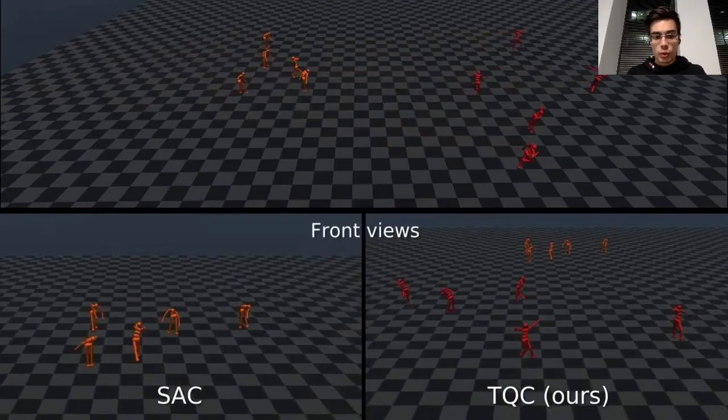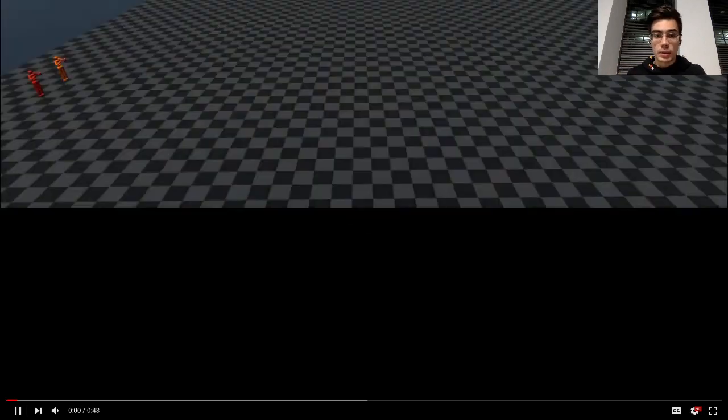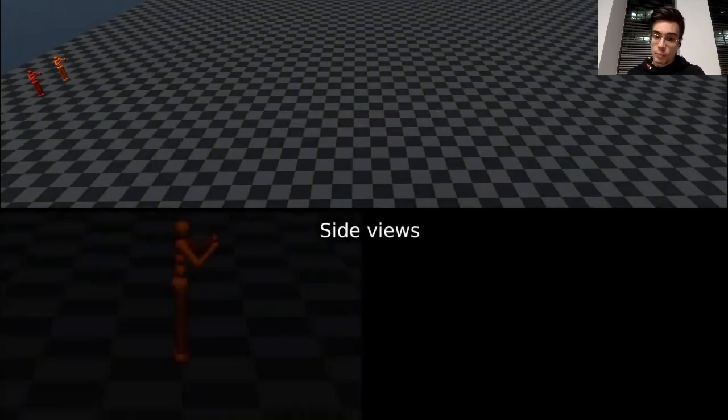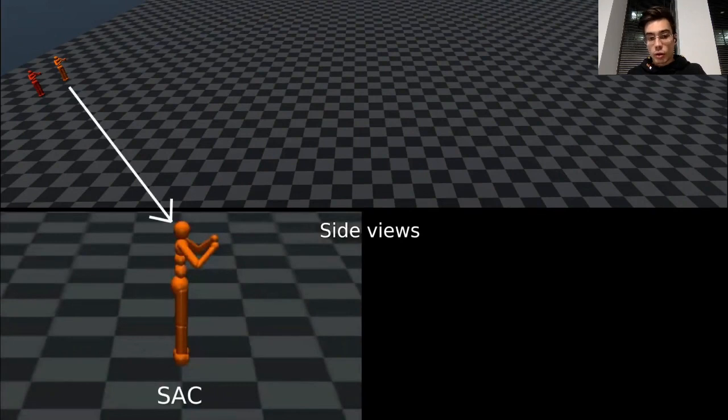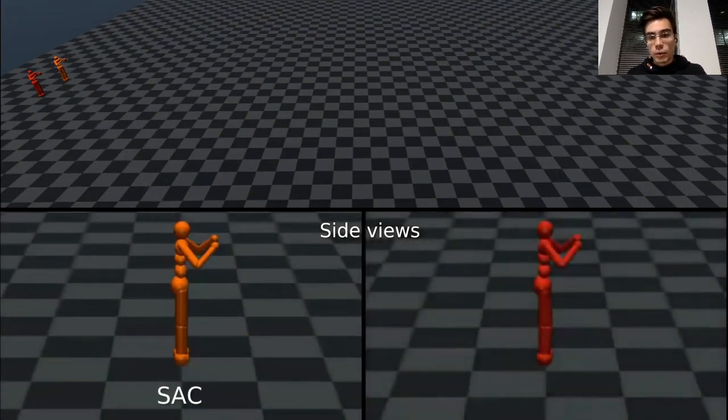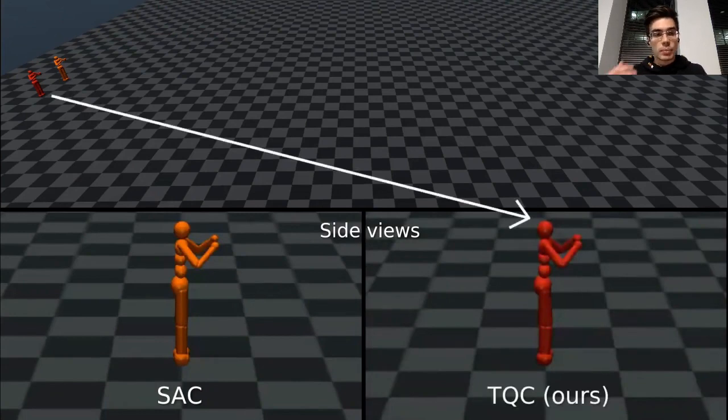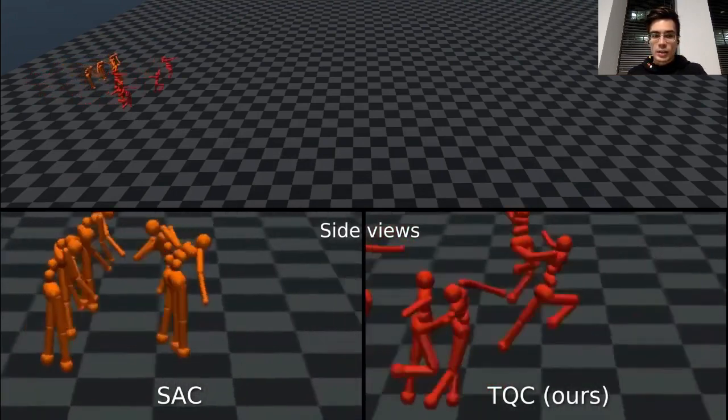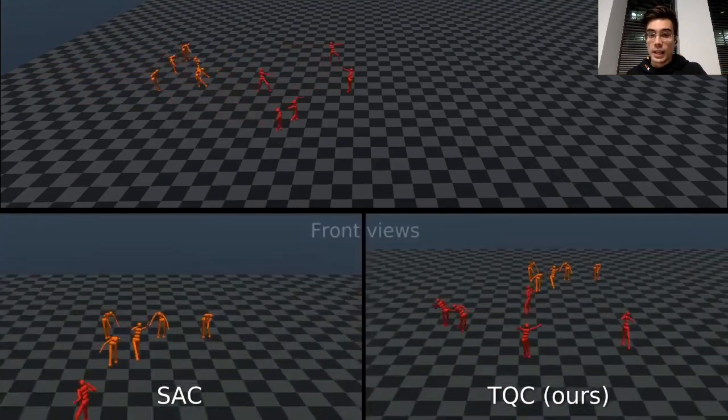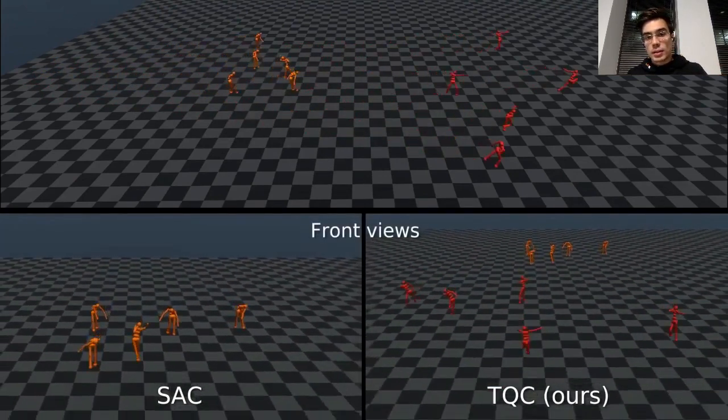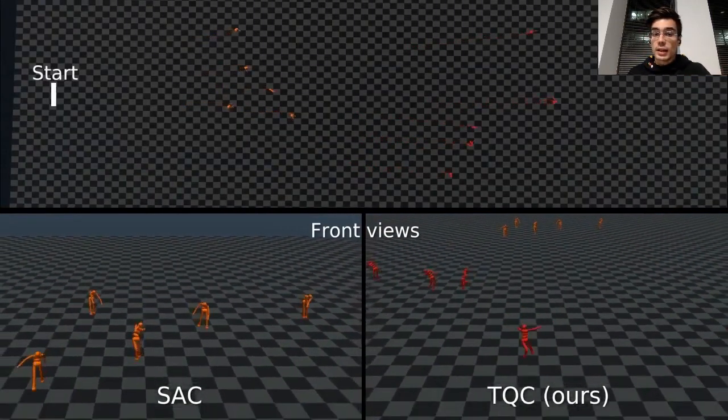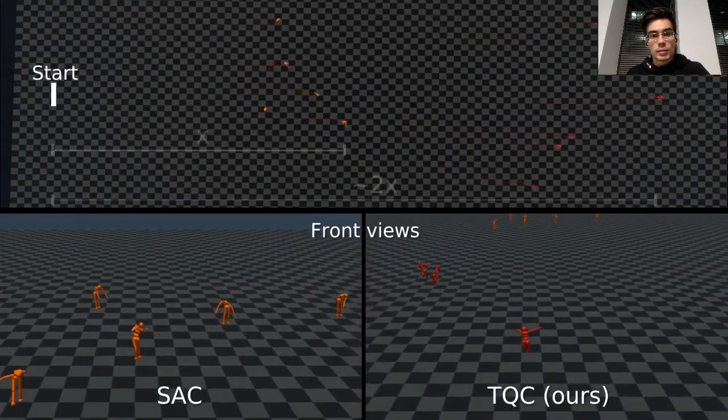Now I want to show you how this performance increase looks like in practice in the environment. We compared Soft Actor Critic, SAC, the previous state of the art in orange, and our method TQC in red. The goal here is to run as fast as possible under some fixed amount of interaction of data. And now it is clear that 20 to 30 percent increase in performance translates to almost twice as fast agents.